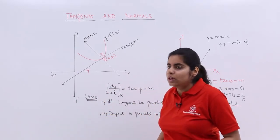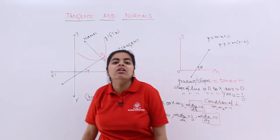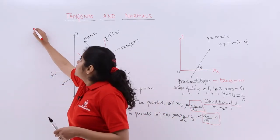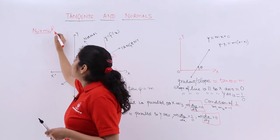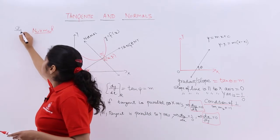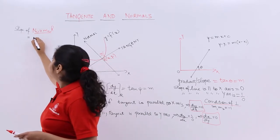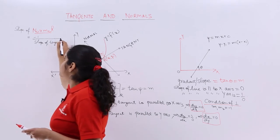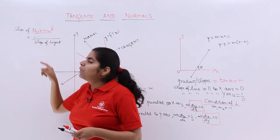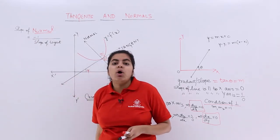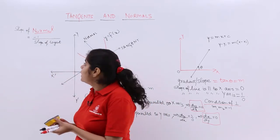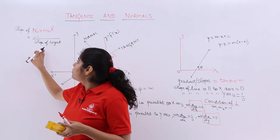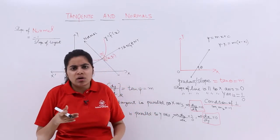Now, what about the normal? The normal is perpendicular to the tangent, and using the condition of perpendicularity — m1 × m2 = −1 — the slope of the normal equals −1 divided by the slope of the tangent. The slope of the normal must be such that when multiplied by the slope of the tangent, the result is −1. That is all about tangents and normals.